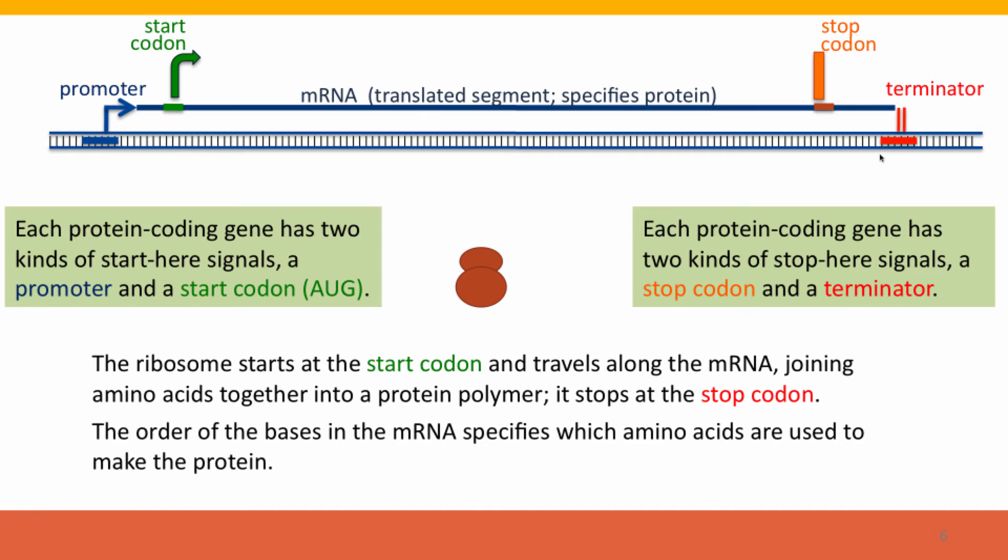And again, the terminator tells RNA polymerase where to stop. Now let's add on to this process the signals that control protein synthesis. So now we have two more signals. Another start signal, the start codon it's called, and another stop signal, the stop codon. So each protein coding gene has two start here signals. It has the promoter, which is a signal in the DNA, and it has the start codon, which is a signal that acts in the RNA, but in fact that is coded also in the DNA. But it's recognized in the RNA by the ribosome, the protein and RNA factory, that will synthesize the protein.